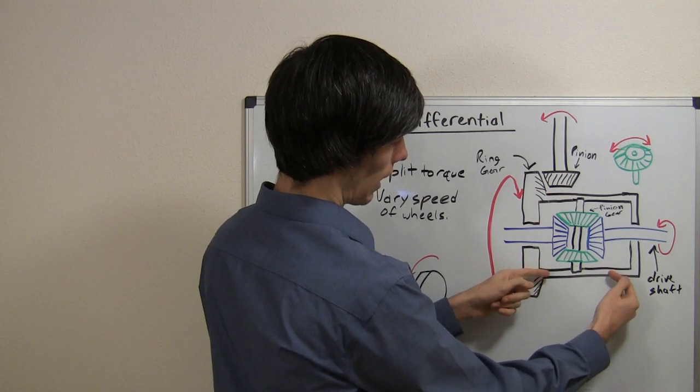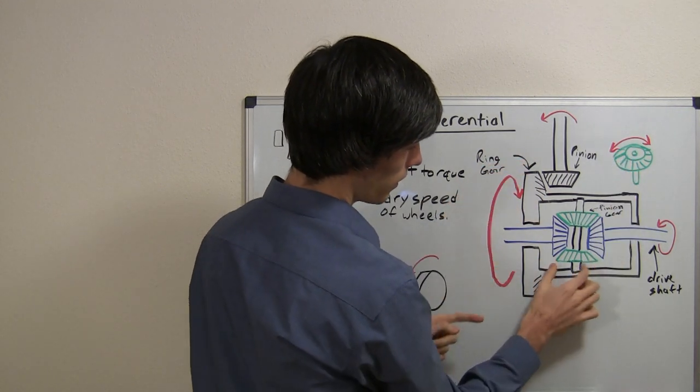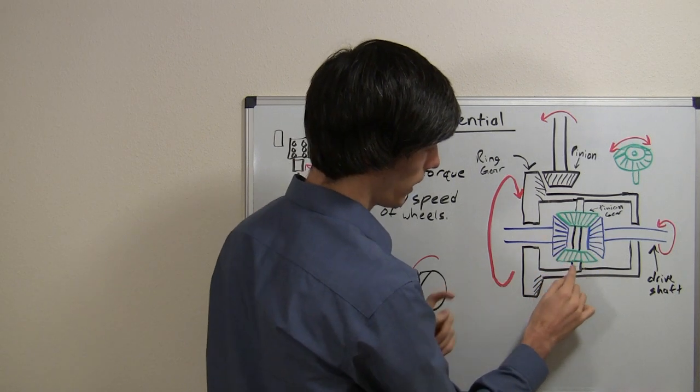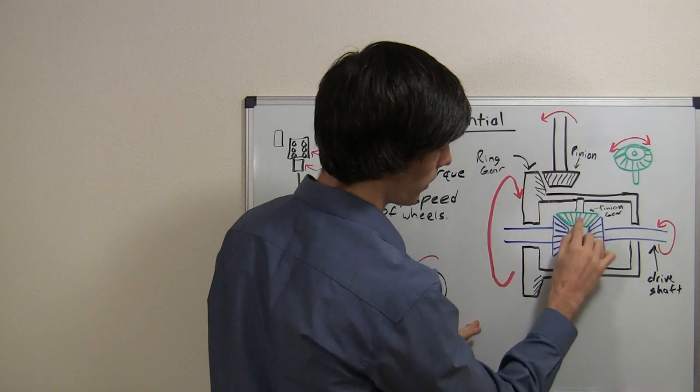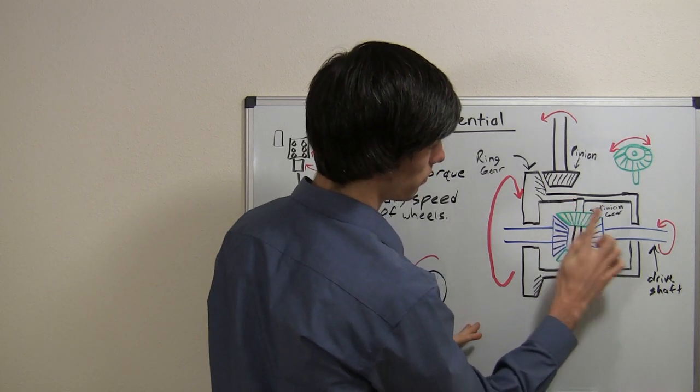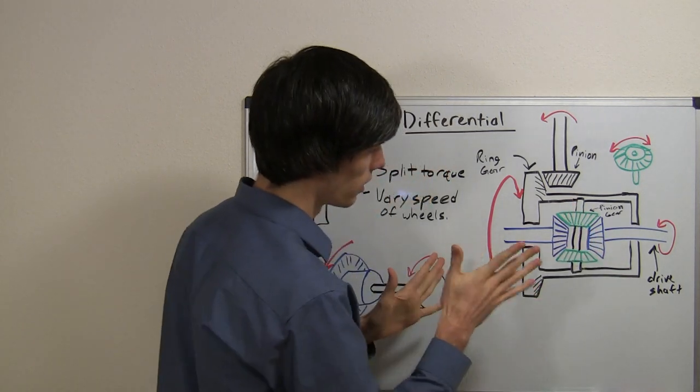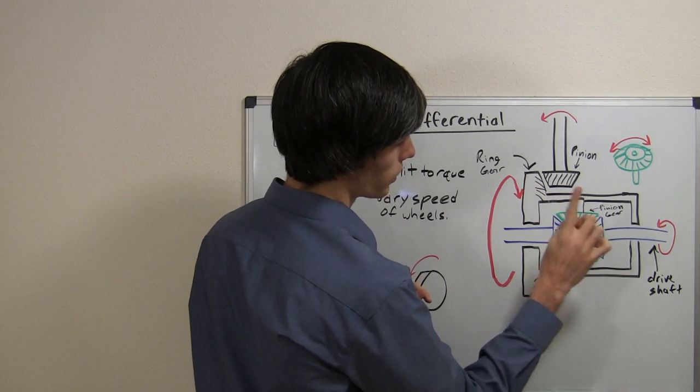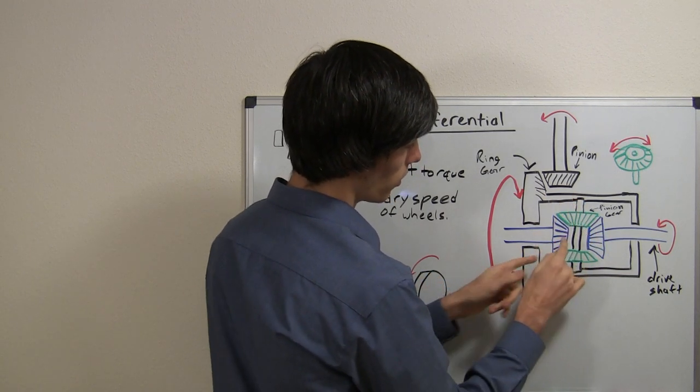as this housing rotates up, these gears, these pinion gears, which by the way are on bearings so they can rotate around this pinion shaft, which I'll explain later why that's important. But know that these can freely rotate around that shaft and know that